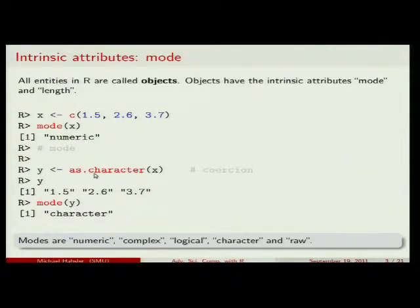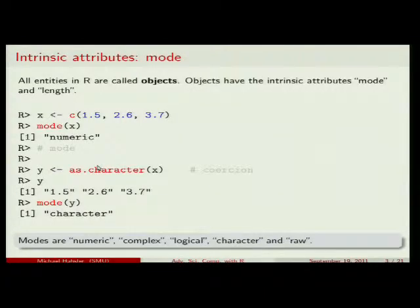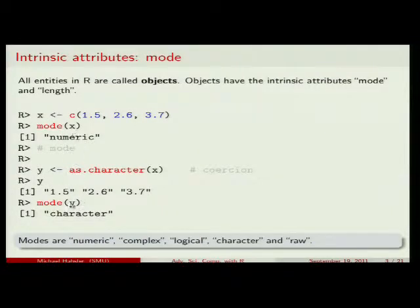You can do coercions of objects to get a new object. You take the object x, coerce it — in this case each element is coerced into a string — and assign it to a new object y. Then we have two objects, y and x, and y now has the mode character.